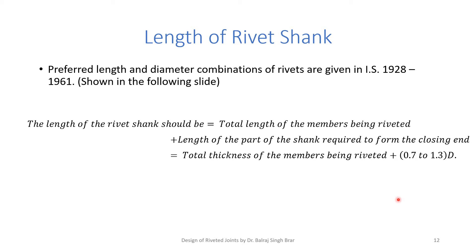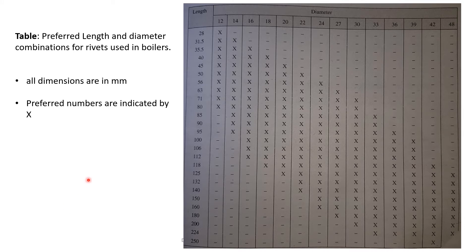Length of rivet shank: according to Indian standards, the length of the rivet shank should be the total length of the members being riveted plus the length of the part of the shank required to form the closing end — that is, total thickness of members being riveted plus 0.7 to 1.3 times D, depending upon the head type. This table shows the standard diameters and their preferred lengths in which rivets are available. For example, 12 mm diameter rivets are available in lengths from 28 to 80 mm, and 30 mm diameter rivets from 71 to 200 mm.